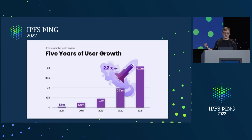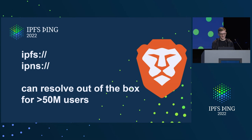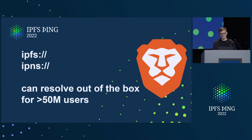It may not sound like much, but it really is a lot because Brave is more than doubling their monthly active user base year over year. In 2021 it was over 50 million users, and we are in the middle of 2022 — just saying. That means content-addressed data, addresses that don't have a location, can now resolve out of the box for more than 50 million users. I'd argue that's a pretty popular IPFS implementation running in production.